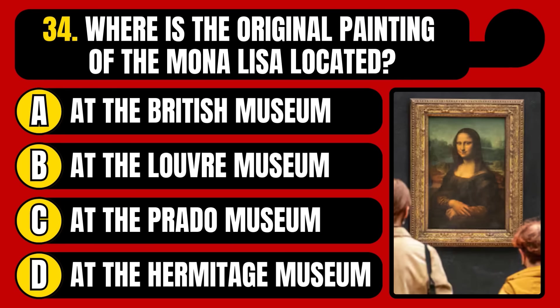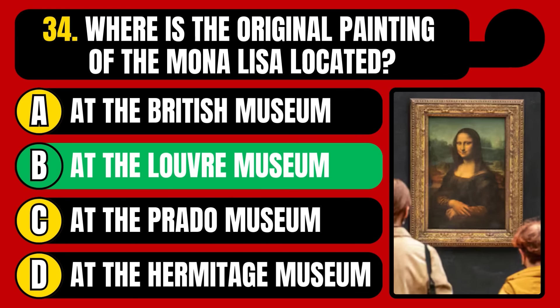Where is the original painting of the Mona Lisa located? At the British Museum, at the Louvre Museum, at the Prado Museum, or at the Hermitage Museum? The correct answer is option B, it is at the Louvre Museum.